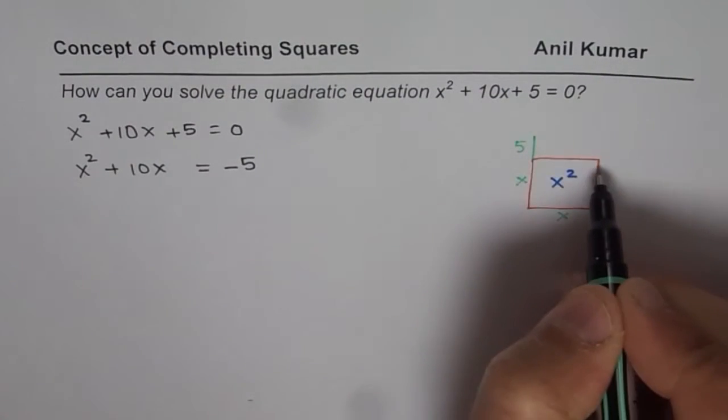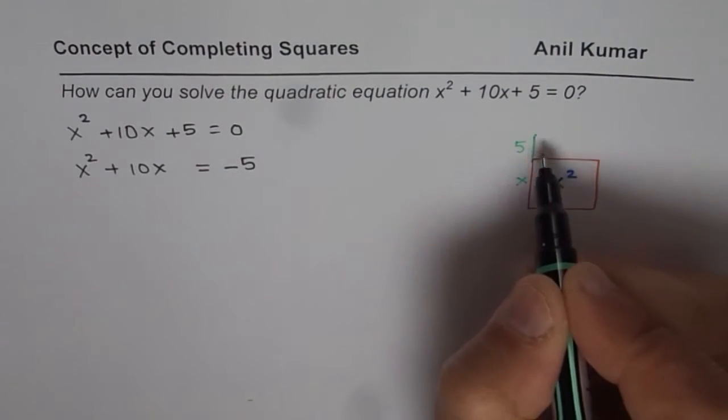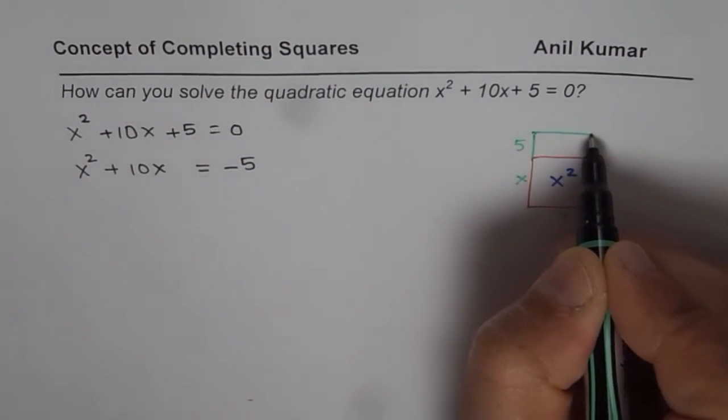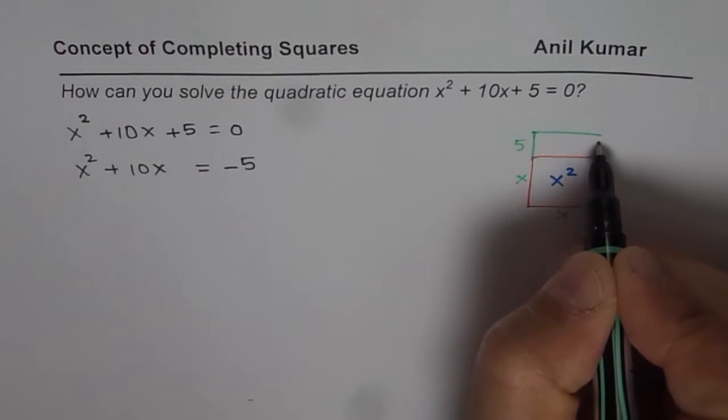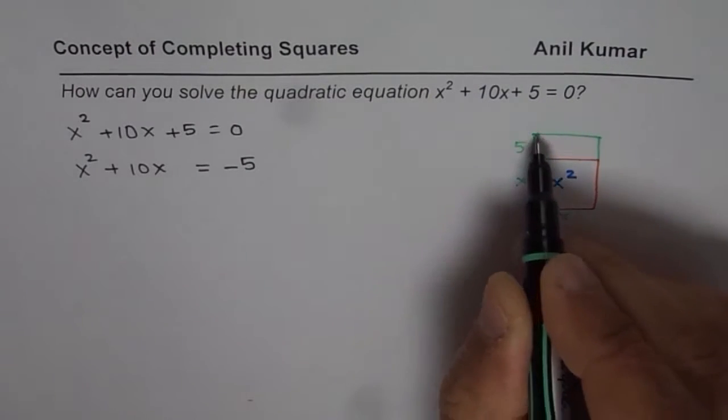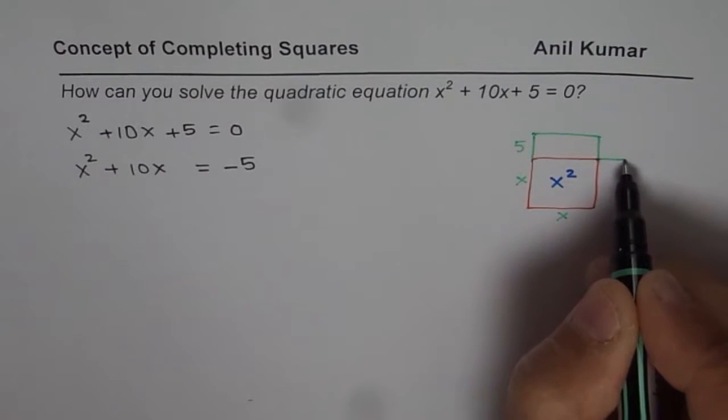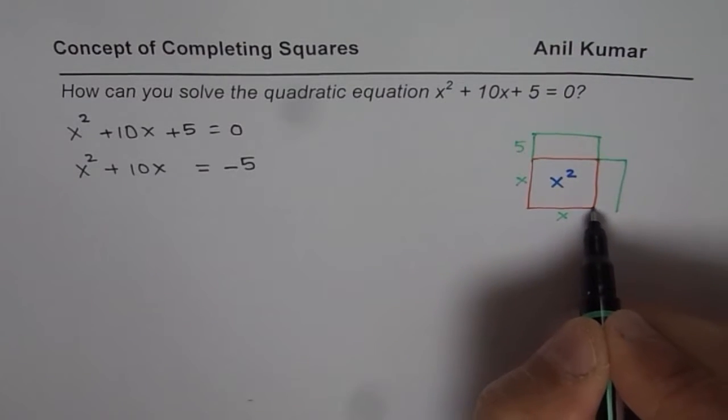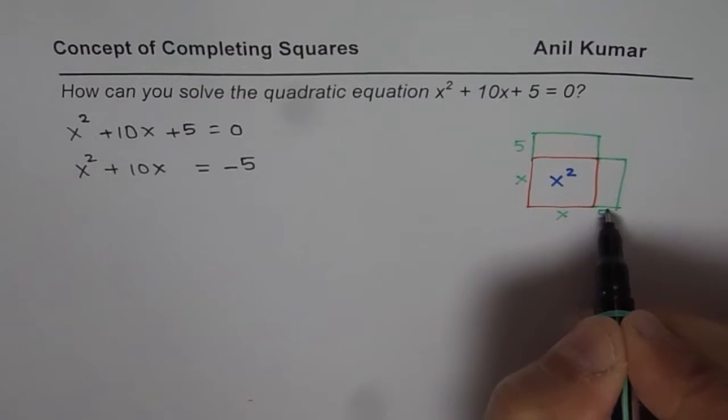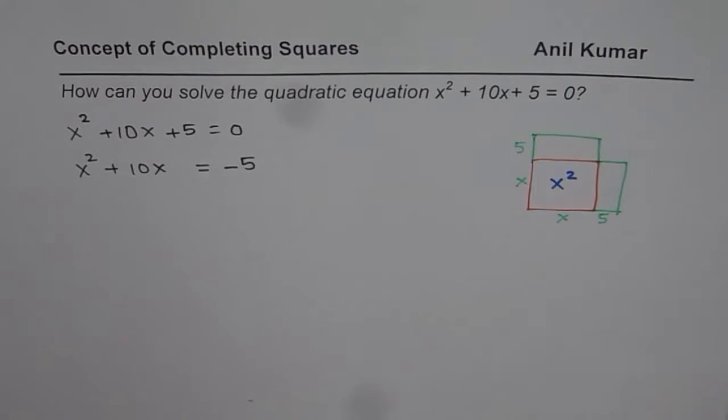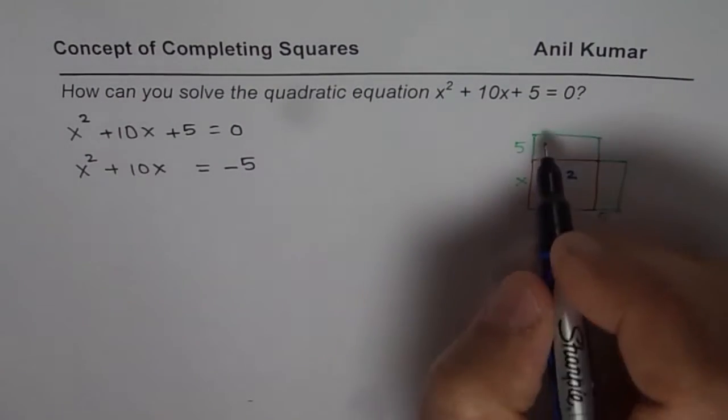If this is 5, then I make a rectangle here—that becomes 5x. I can have x on this side and 5 on this side. Then I get another rectangle, also 5x.